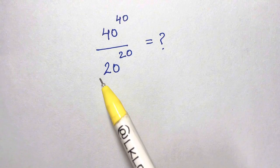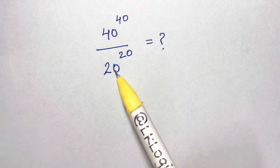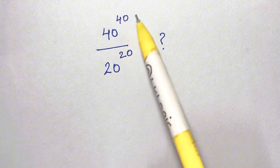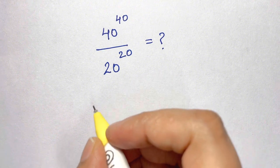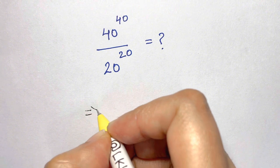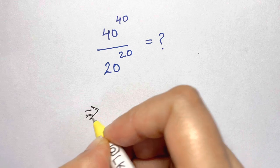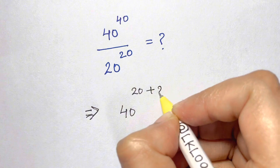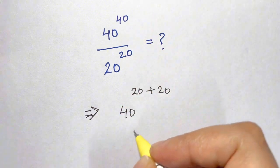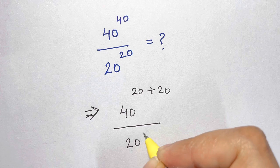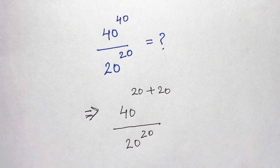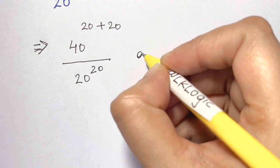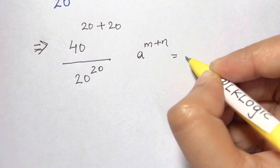Hi everyone! Here we have a fun and interesting exponential solution. What we're going to do is split 40 in terms of 20, so we can write it as 40 over 20 plus 20, which gives us 40 back. Now we're going to apply the law: a to the power of m plus n is equal to a to the power of m times a to the power of n.